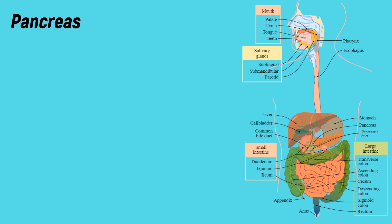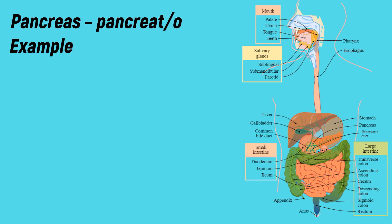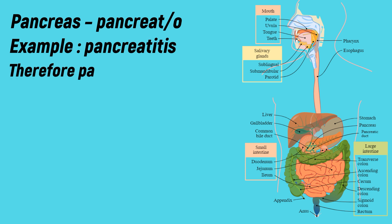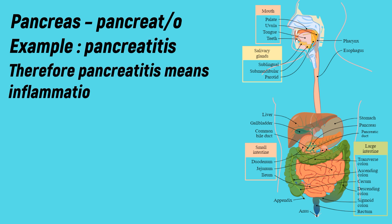Pancreas: the medical term for pancreas is 'pancreato'. Example: pancreatitis. -Itis means inflammation. Therefore, pancreatitis means inflammation of the pancreas.